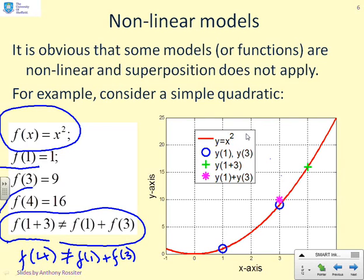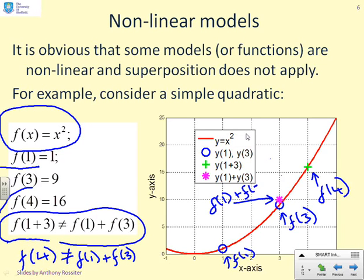Here's f of 1, here's f of 3, and here is f of 4. But there is f of 1 plus f of 3. And clearly, they're not the same. Now, that doesn't surprise you. You didn't really expect a quadratic to be linear because it's a curve.